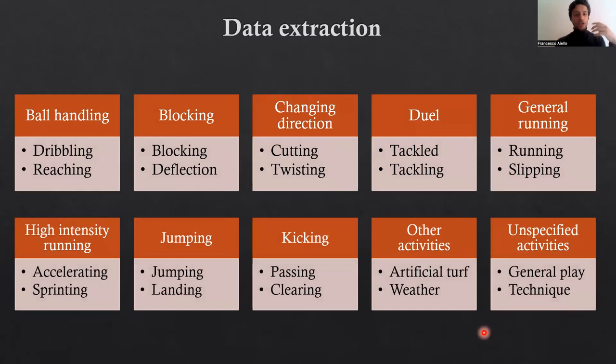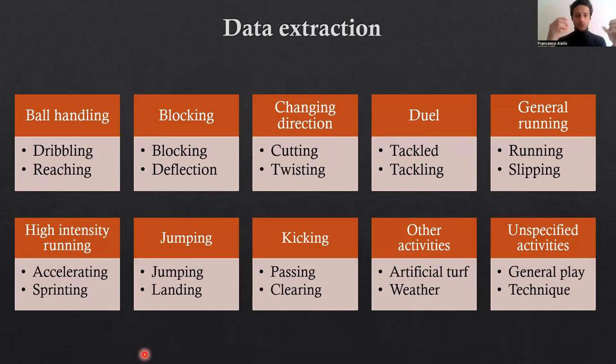We decided to analyze data descriptively. To do so, we categorized all data into broad categories. For example, all running activities referring to high intensity — accelerating, sprinting, high speed — were categorized as high intensity running. Similarly, all passing, clearing, shooting, and kicking were categorized as kicking. This categorization was admittedly arbitrary, but it was necessary because otherwise analyzing the data would have been very difficult.